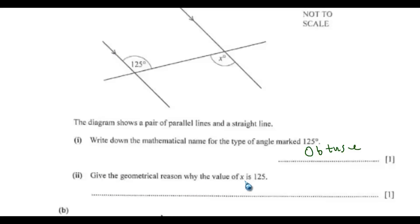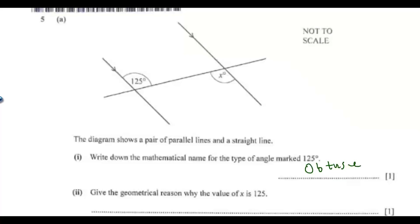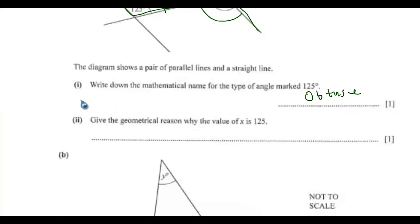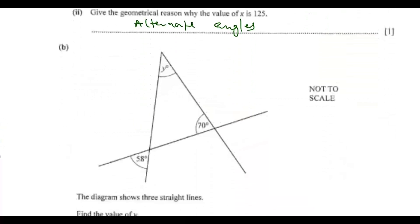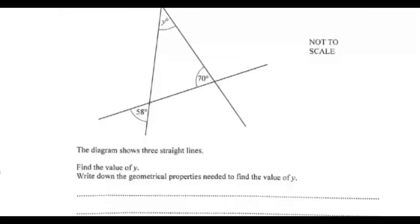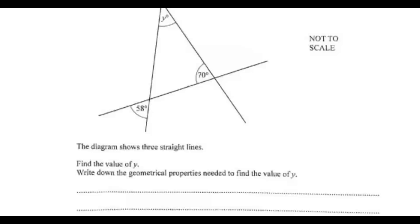Now I want to give the geometrical reason why the value of x equals 125. If you trace it, you can see this will form the letter Z. These are alternate angles. So you can just write 'alternate angles'.